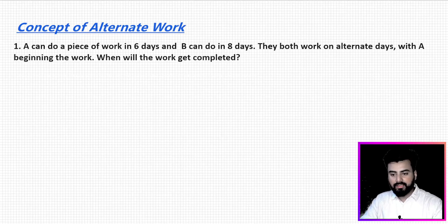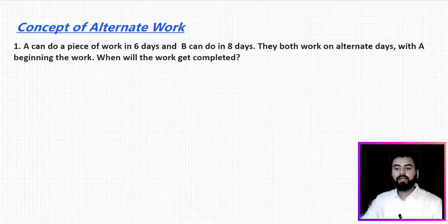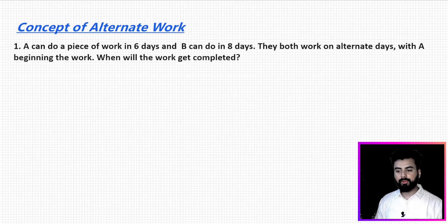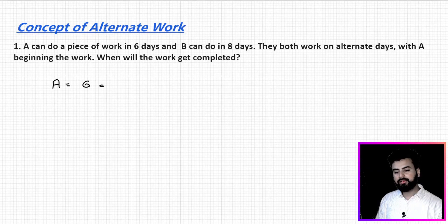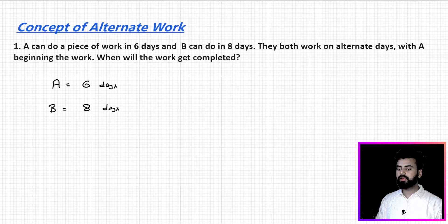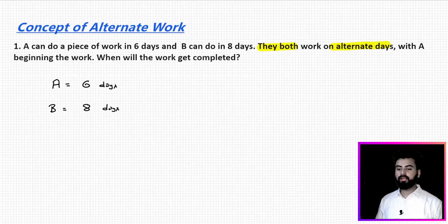Let us start this session by first understanding what alternate work is. To understand this, consider this example: A can do a piece of work in 6 days while B can do it in 8 days. The condition is they both work on alternate days — alternate means at a gap of 1 — with A beginning the work.